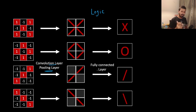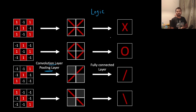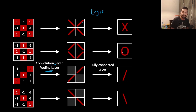This is a fully connected layer. This is the logic, automated with the argument. The problem is that this circle, this round, is not perfect. But this is how the computer understands.